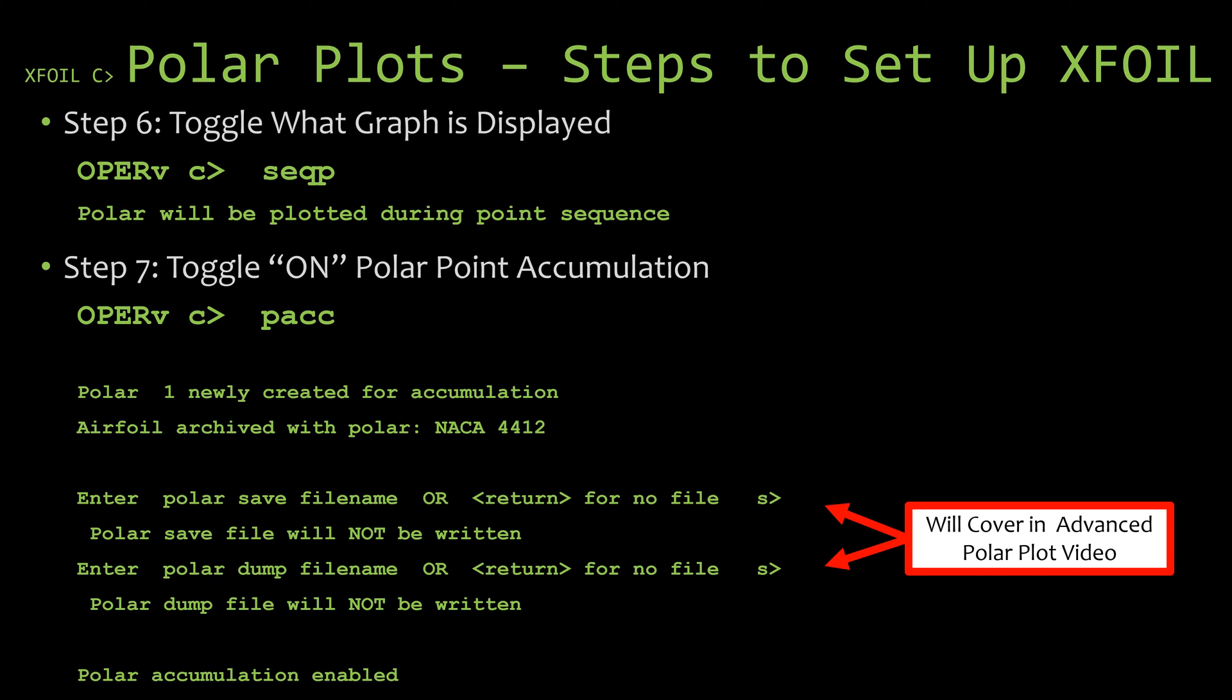This is just telling us that we toggled from the pressure distribution plot to now it's going to be displaying the polar plot when we run our analysis. If we want to switch back to the pressure distribution plot, we just use this exact same command, type it in and hit enter, then you'll see that it will say the cpx or the pressure distribution plot will be plotted during point sequence. So this essentially just switches back and forth between the polar plot and the pressure distribution plot.